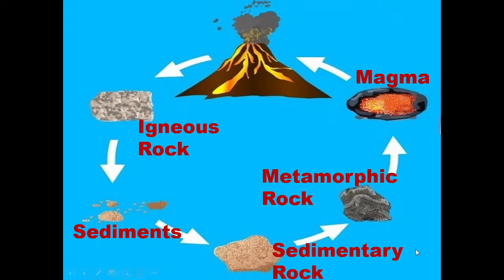Now we are going to have a look at the rock cycle. As you can see in this picture, magma erupts from the volcano and comes down to the surface. It forms a rock called igneous rock. Igneous rock breaks down into sediments. Sediments and the bodies of dead creatures sink to the bottom of the sea and form sedimentary rock. By heat and pressure, sedimentary rock and igneous rock are compressed to form a metamorphic rock.